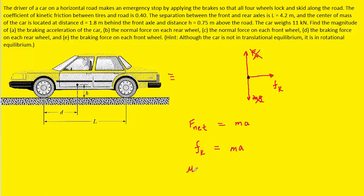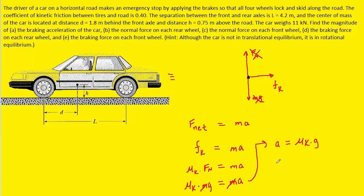The kinetic frictional force equals the coefficient of kinetic friction times the normal force, and since the normal force equals mg, we can plug in mg. The mass m appears on both sides so we divide it out, giving us acceleration equal to the coefficient times g. With a coefficient of kinetic friction of 0.4 multiplied by 9.8 m/s², we get 3.92 m/s² — the correct answer to part A.